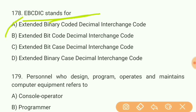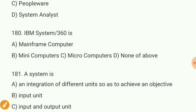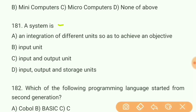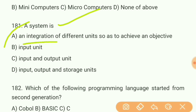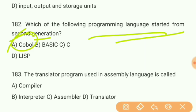Question 178: EBCDIC stands for what? Answer A — Extended Binary Coded Decimal Interchange Code. Question 179: Personnel who design, program, and maintain computer equipment refers to what? Answer — people who work in IT/computing roles. Question 180: IBM System 360 is what? Answer — a mainframe computer. Question 181: A system is what? Answer A — an integration of different units so as to achieve an objective. Question 182: Which programming language started from second generation? Answer A — COBOL. Question 183: The translator program used in assembly language is called what? Answer C — assembler.